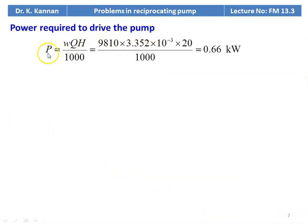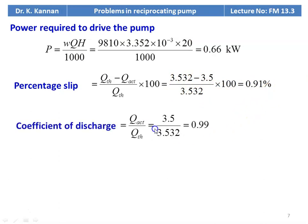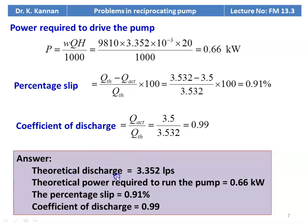Power required to drive the pump: P = W × Q × H / 1000 = 9810 × 3.532×10⁻³ × 20 / 1000 = 0.66 kW. Percentage of slip = (Q_theoretical − Q_actual) / Q_theoretical × 100 = (3.532 − 3.5) / 3.532 × 100 = 0.91%. Coefficient of discharge = Q_actual / Q_theoretical = 3.5 / 3.532 = 0.99. Summary: theoretical discharge = 3.532 LPS, theoretical power = 0.66 kW, percentage of slip = 0.91%, coefficient of discharge = 0.99.